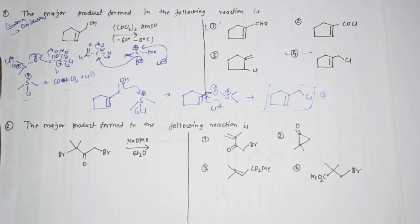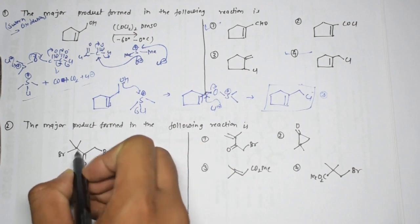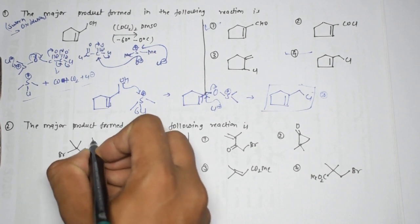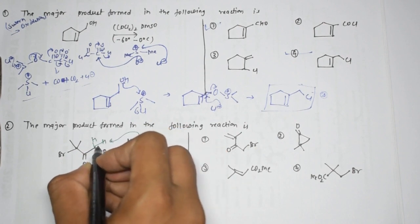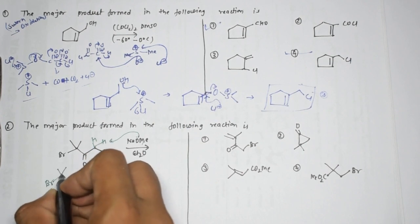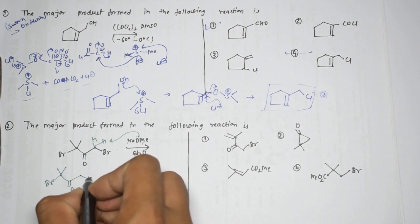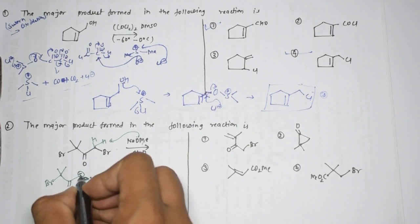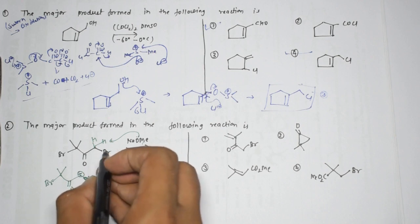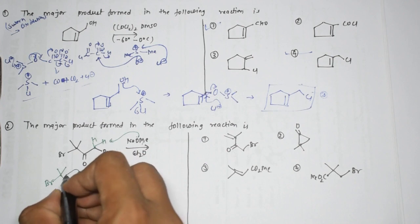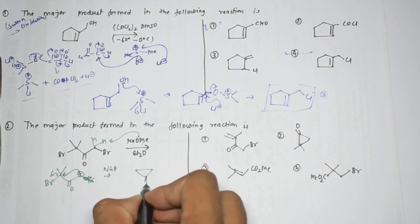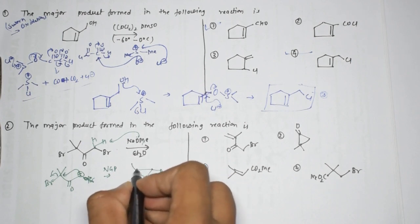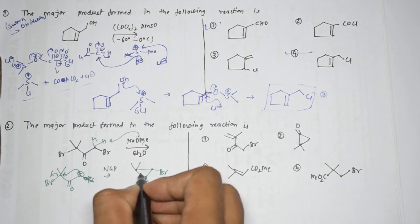The next problem: we have a compound with two acidic hydrogens. The base NaOMe abstracts a proton, generating a negative charge. Br remains at its position since it's the hydrogen that's abstracted. This negative charge attacks the adjacent carbon and Br is removed - just like neighboring group participation (NGP) - giving an intermediate with C double bond O, one Br, and the ring.